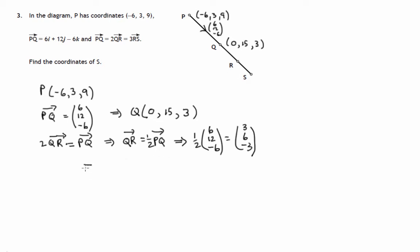So that implies that the point R, if we're now at Q where x is 0 and we've done 3 along the x-axis, we're ending up at 3. If we're at 15 on the y-axis and we do another 6 units along the y-axis, we're ending up at 21.